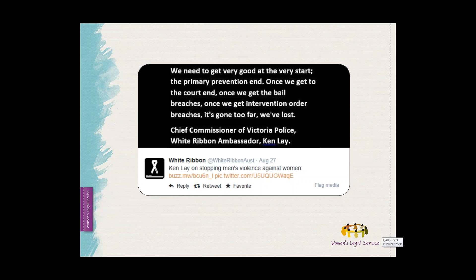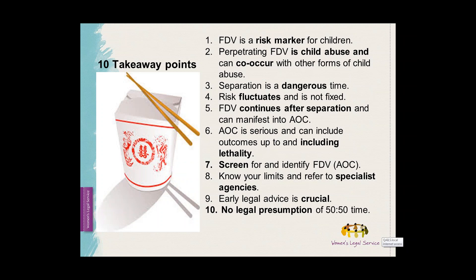We approach the training package on the basis that early intervention and prevention is key. So making good and early referrals to domestic violence services, screening for and identifying domestic violence in children, adult victims and perpetrators — and this is obviously wider than just lawyers, this is for the community sector as a whole — being able to more easily identify high risk matters and red flags and act on them accordingly is key. A common theme that runs through these takeaway points is the interrelationship between violence against women and violence against children.